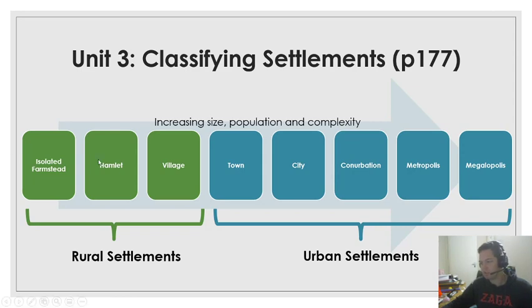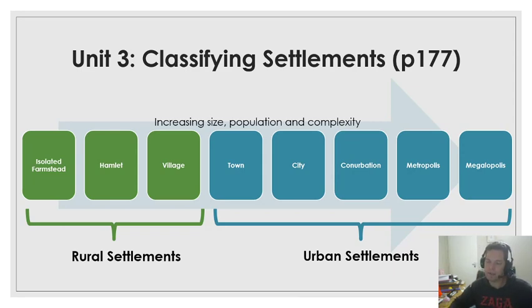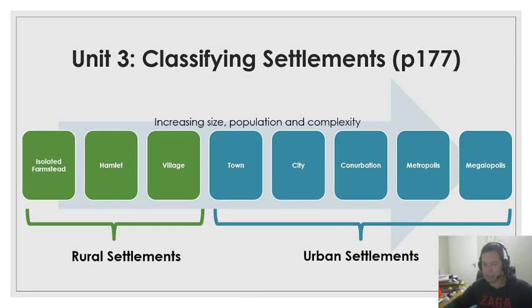The final rural settlement on that section, just getting a bit larger, would be a village. A village is when you're still very small in size, but slightly bigger population, slightly more densely populated than the hamlet. And then as our settlement gets bigger, we move out of the rural settlement classification into urban. So a village is not an urban area.